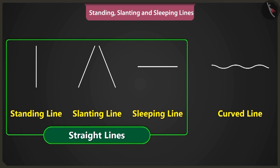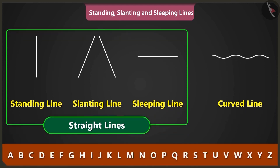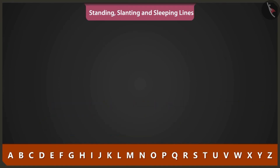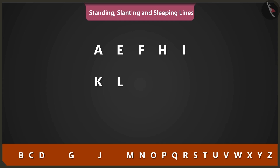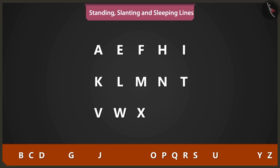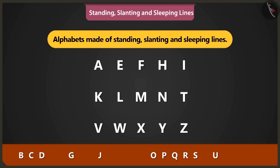Apart from drawing pictures, we can also use these lines to write A, B, C, D. Yes, Bittu. It looks like the alphabets A, E, F, H, I, K, L, M, N, T, V, W, X, Y, and Z are made using standing, slanting and sleeping lines.